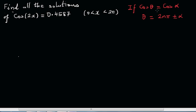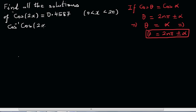If you have cos on both sides, the same thing implies if θ equals α, then θ equals 2nπ plus or minus α. From this form, if I want to cancel this cos, I can do cos inverse of cos(2x) equals cos inverse of 0.4587.